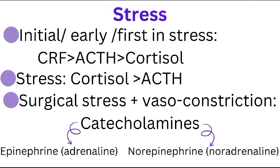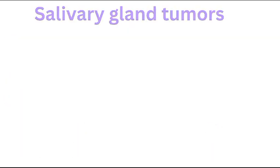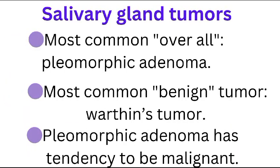If the initial, early, or first hormone to be released in stress is asked, the sequence follows as: corticotrophin releasing factor, then ACTH, and then cortisol. If only stress is asked, cortisol is preferred over ACTH. If surgical stress and vasoconstriction is asked, catecholamines would be released, involving epinephrine and norepinephrine.